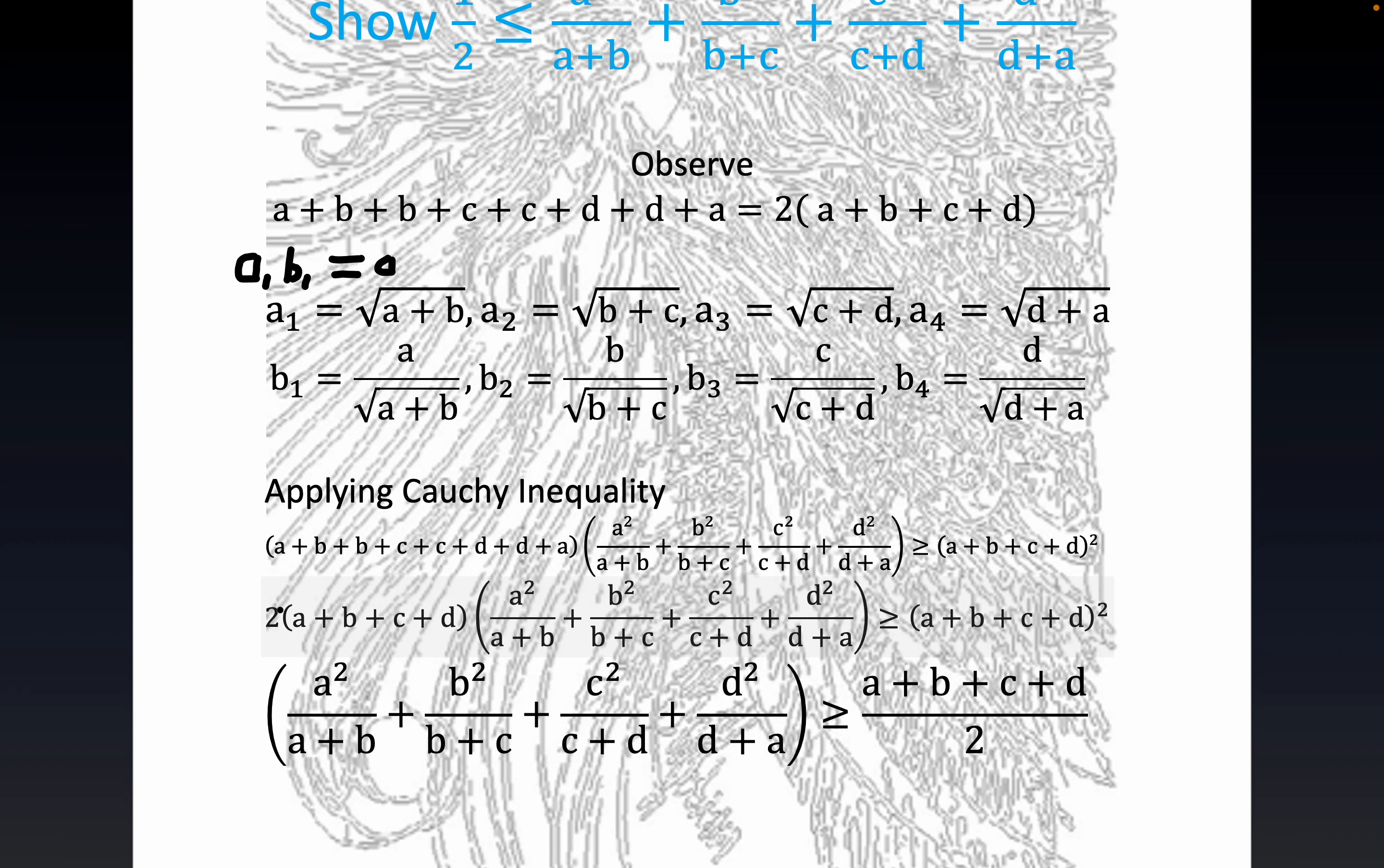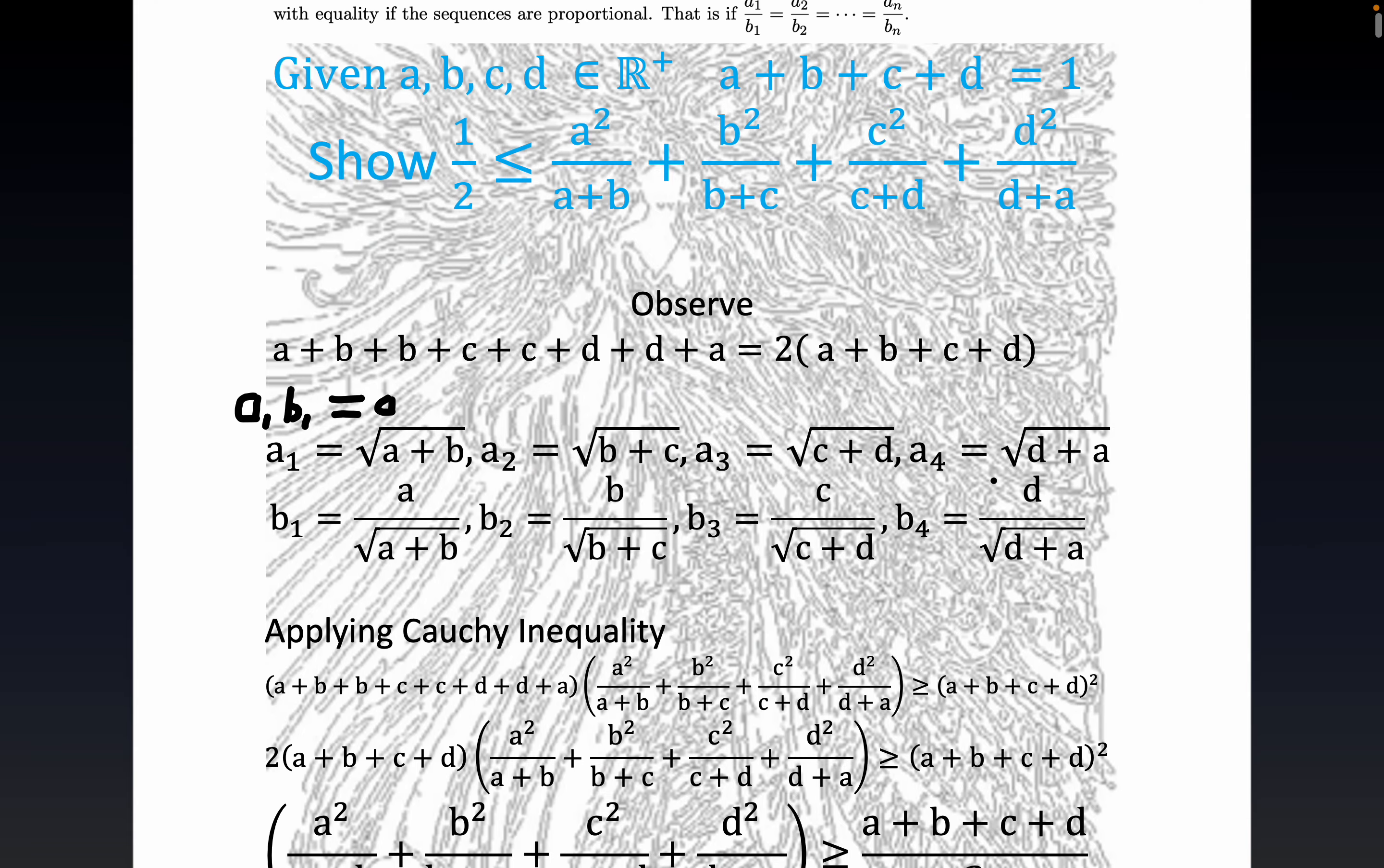And so when you divide through by this you certainly get this piece right here, okay. So again, it's fairly straightforward algebra after you apply the Cauchy-Schwartz inequality. Now notice, let's not forget that a+b+c+d is equal to one.